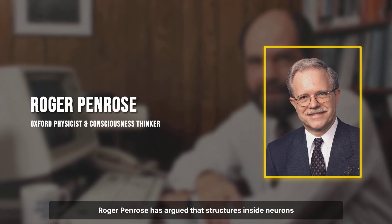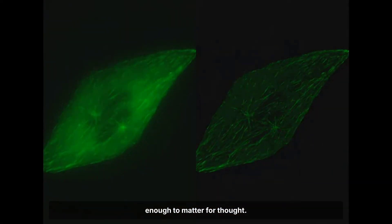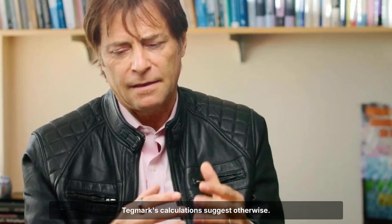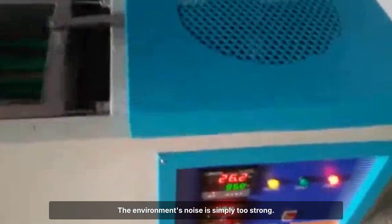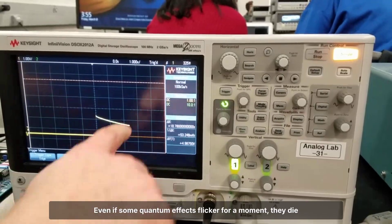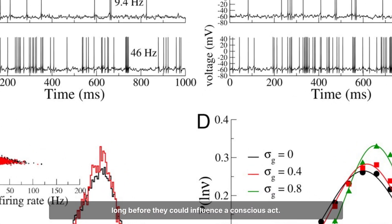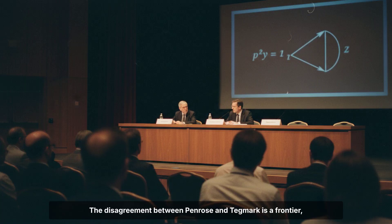Roger Penrose has argued that structures inside neurons called microtubules might protect quantum coherence long enough to matter for thought. Tegmark's calculations suggest otherwise. The environment's noise is simply too strong. Even if some quantum effects flicker for a moment, they die long before they could influence a conscious act. The disagreement between Penrose and Tegmark is a frontier, not a settled verdict.